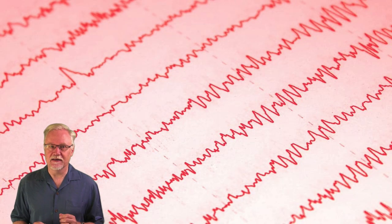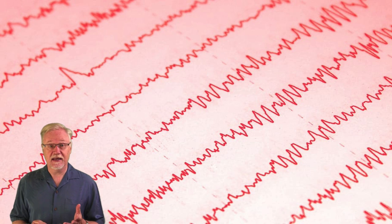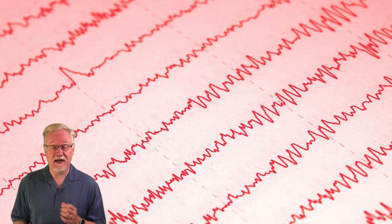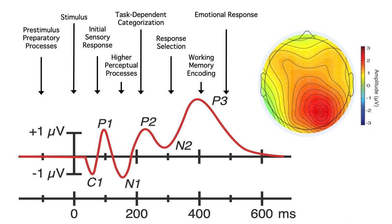Now when you look at the raw EEG, it's a pretty complicated signal. It's basically the sum of everything the brain is doing. It can indicate if someone's awake or asleep, but in its raw form, the EEG can't reveal the specific neural processes that underlie perception, cognition, and emotion. However, if we apply a simple set of signal processing operations to the raw EEG, we can pull out portions of the neural activity that are related to specific sensory, cognitive, affective, and motor processes.